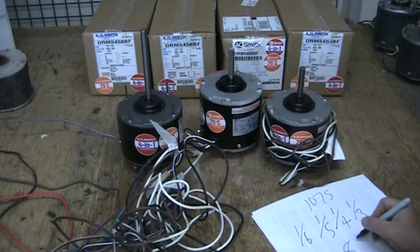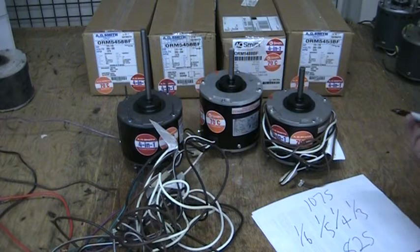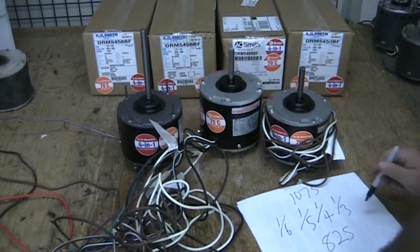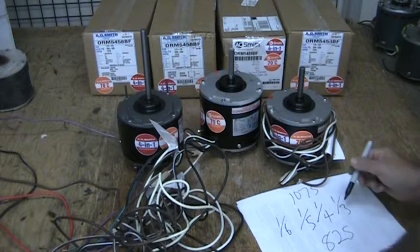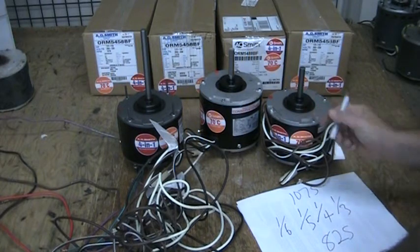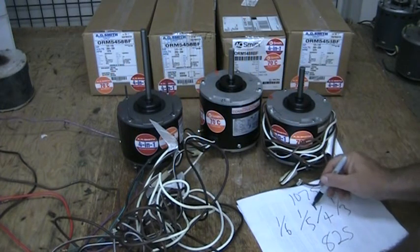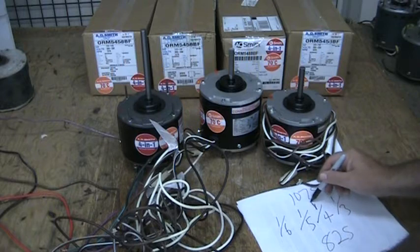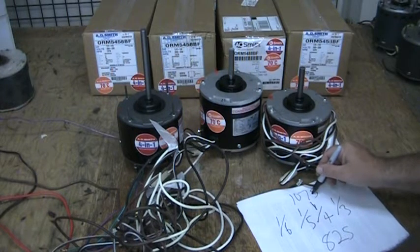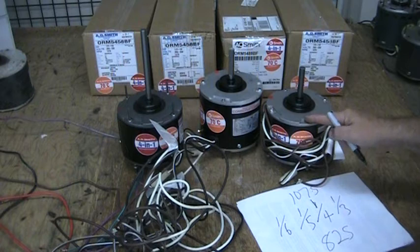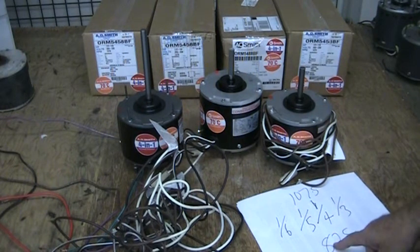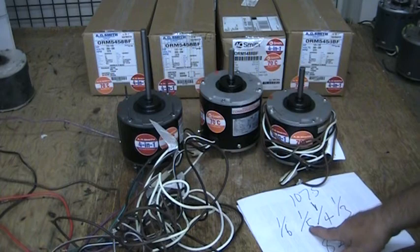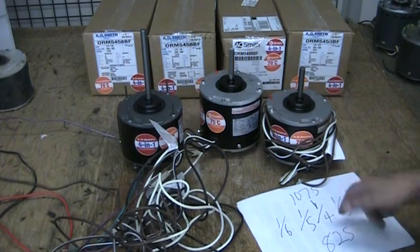Or if you have the 825 RPM, then you would order the 825 RPM. And it doesn't matter which of these horsepowers that you happen to have. Let's say you have a 1-4th horsepower motor and it's 1075 RPM, you would order the 4-in-1 1075, and you would be covered. If you had the 825 RPM and let's say 1-5th horsepower, then you would order the 4-in-1 825.